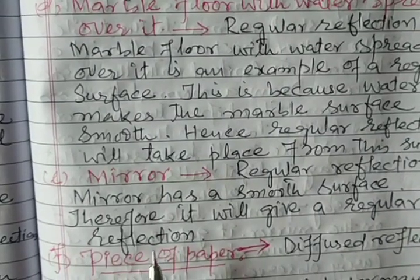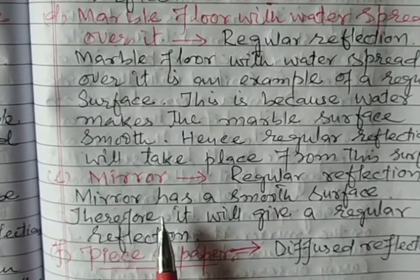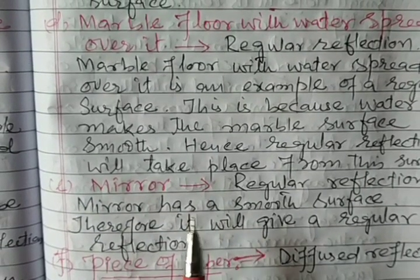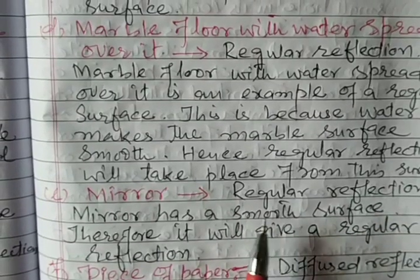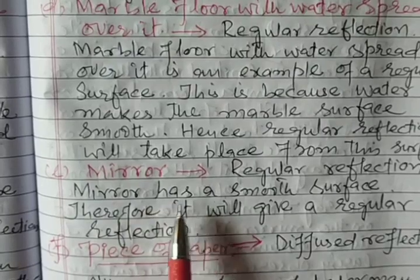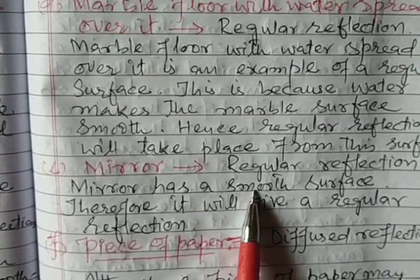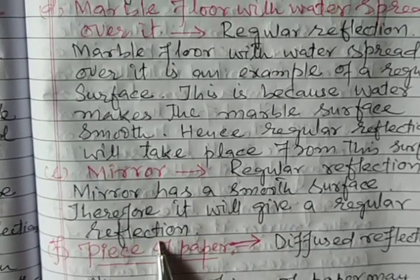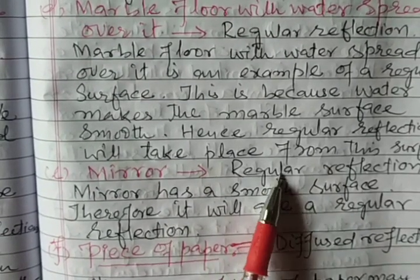Part E: Mirror. A mirror has a smooth surface. Therefore, it will give regular reflection. So the answer for the mirror is regular reflection.